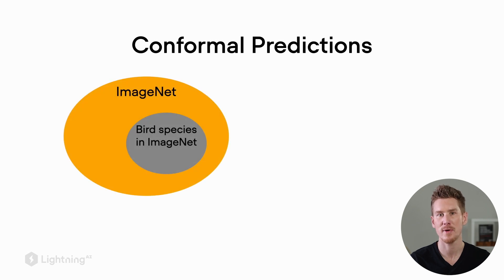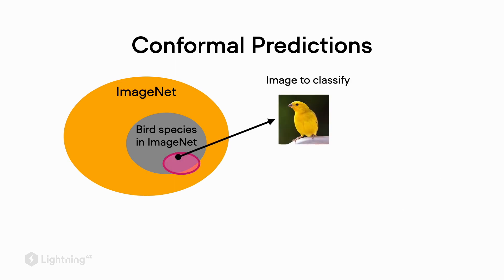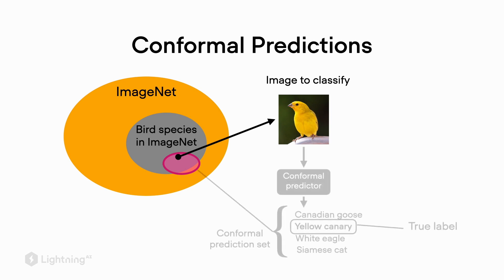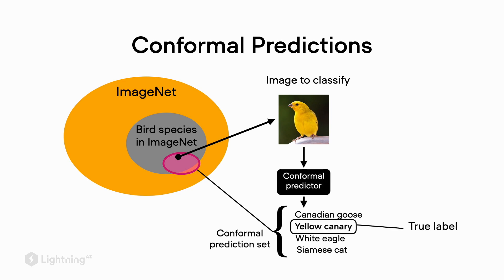To understand conformal predictions, imagine we have the ImageNet dataset and want to train a classifier to classify bird species. We sample one of these pictures and put it through our classifier. The conformal prediction method then produces a set of labels, and with a certain confidence we are guaranteed that the true label is among them. For instance, with 95% confidence, there is a 95% chance that the true label is among the predicted labels.